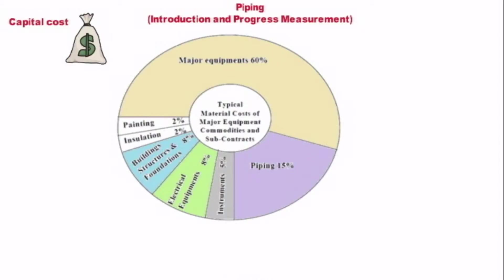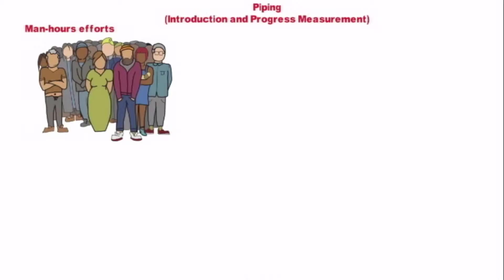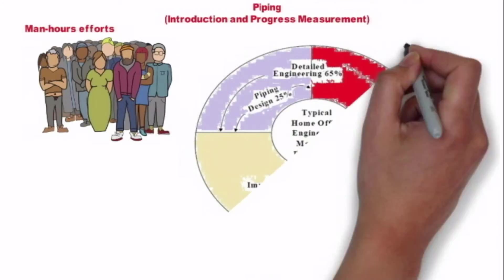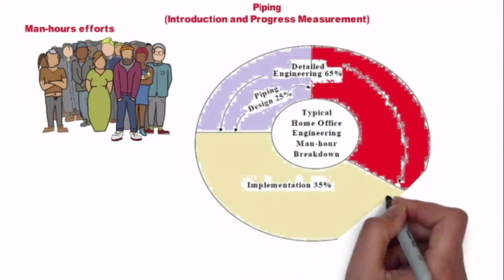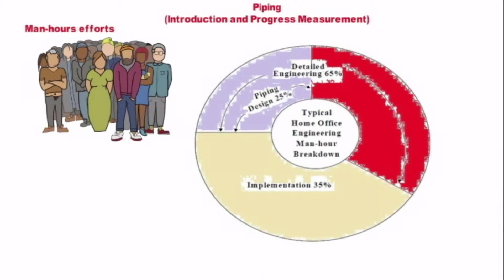Similarly for man-hours effort, you can see in the pie chart. This chart shows the man-hours effort that goes into design engineering at home office for various engineering disciplines in which piping counts around 25 percent. If we talk about engineering effort, normally out of total engineering effort covering project management, detail engineering, procurement, inspection, expediting, etc., 65 percent of the hours are required for detail engineering. Out of this, 25 percent is required for piping engineering alone.